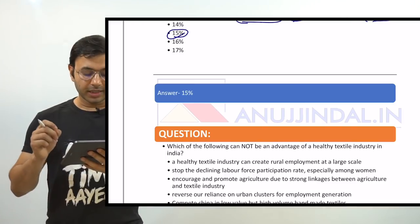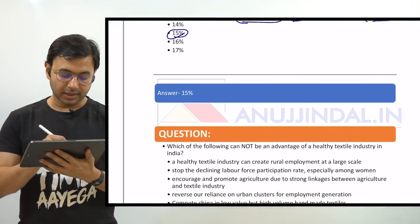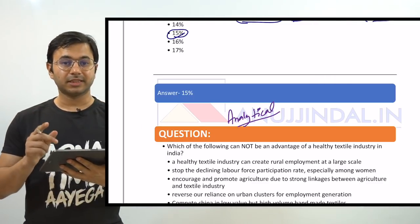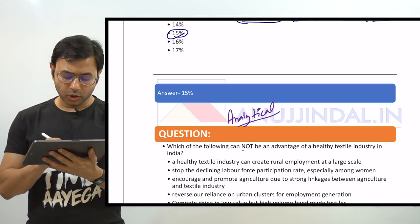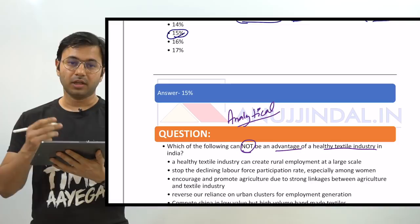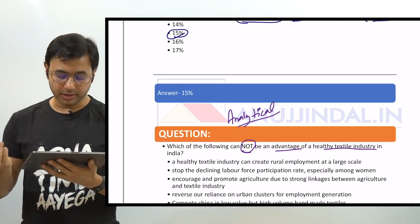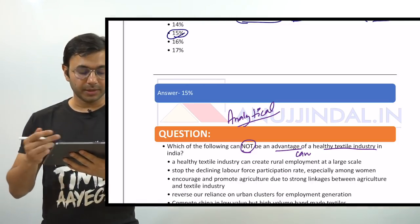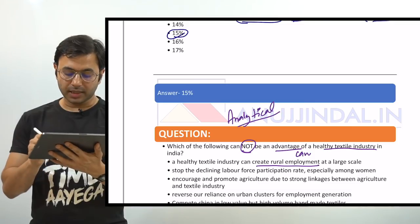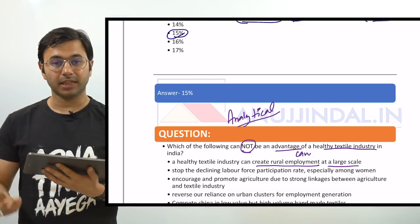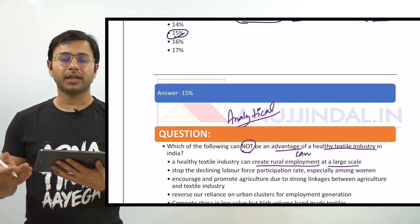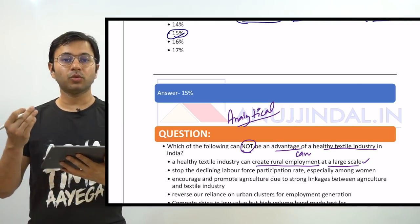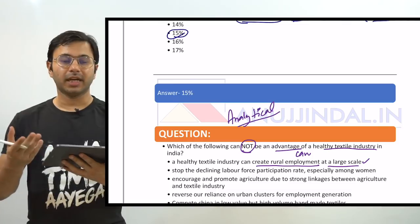The fourth question is analytical: which of the following cannot be an advantage of a healthy textile industry in India? You can make this easier by converting it to 'which of the following can be an advantage' and then eliminating. Option A: a healthy textile industry can create rural employment at a large scale — any healthy industry that generates employment is clearly an advantage, very logical.